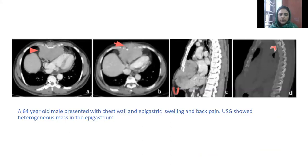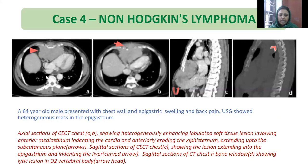Next case: a 64-year-old male presented with chest wall and epigastric swelling and back pain, also showing a heterogeneous mass in the epigastrium. Axial CT chest images showing heterogeneously enhancing lobulated soft tissue lesion involving the anterior mediastinum, indenting the cardiac and anteriorly eroding the sternum, extending up to the subcutaneous plane. Sagittal CT chest images showing the lesion extending into the epigastrium and indenting the liver. Sagittal CT chest in bone window showing a lytic lesion in the D2 vertebral body. Biopsy revealed Hodgkin's lymphoma.